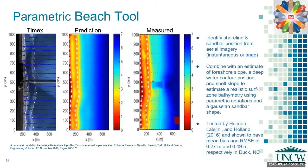One of the approaches of using Timex images for bathymetry inversion is the parametric beach tool. In the 2D implementation, a mean shoreline is input by the user, and the normal transects from the shoreline are calculated. The distance from the shoreline to the sandbar, using expert identification with time-lapsed images, is also input to the model, along with an estimated offshore depth and beach slope. The center image here is the predicted bathymetry, with the measured bathymetry on the right. This inversion model showed a mean bias and root mean square of 0.27 meters and 0.59 meters respectively in Duck, North Carolina.